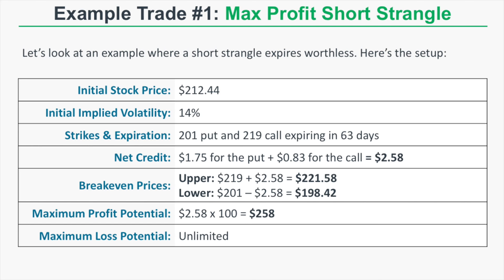Let's look at three real trade examples. The first is where a trader realizes maximum profit. The initial stock price at entry is $212.44, with an initial implied volatility of 14%. We're selling the 201 put and 219 call expiring in 63 days, collecting a net credit of $2.58 — the put for $1.75 and the call for $0.83. Our break-even prices are $221.58 and $198.42, and our maximum profit potential is $258.